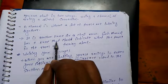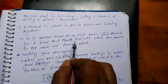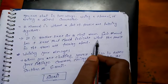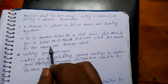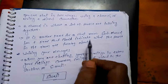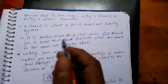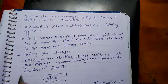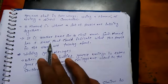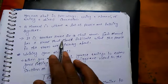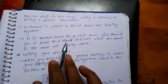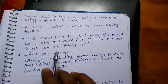Each channel has a name that should indicate what the people in the room are talking about. किस तरीके से chat करते हैं — वो सारे जो हैं, एक दूसरे के साथ people आपस में communicate करते हैं, chatting करते हैं।